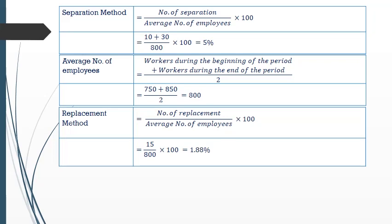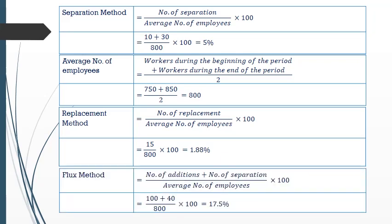Using the replacement method: the number of replacements in the given problem is 15, divided by the average number of employees which is 800, multiplied by 100. This gives us 1.875 percent, approximately 1.88 percent.